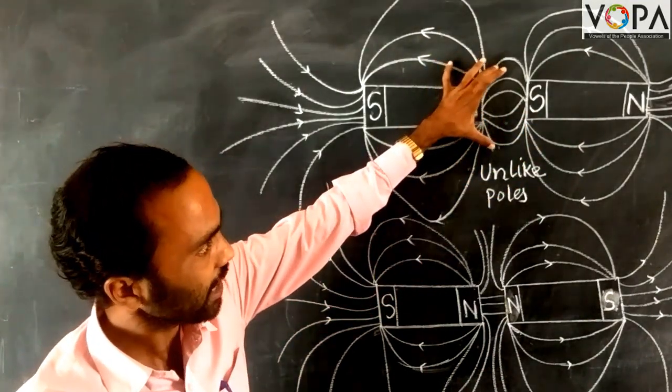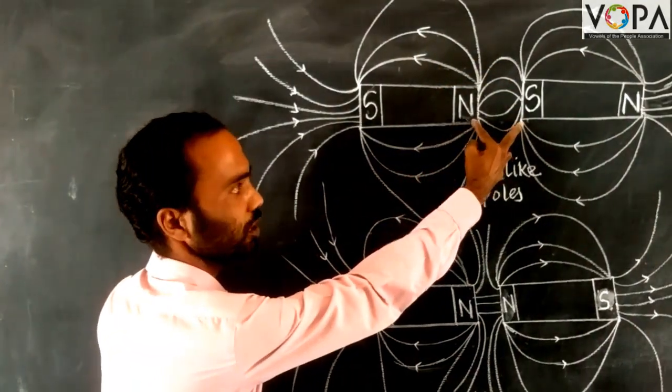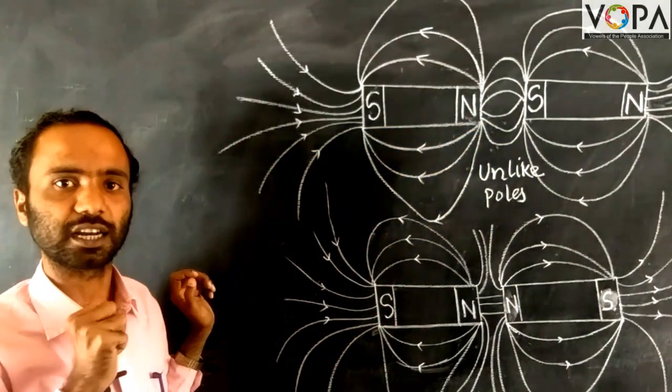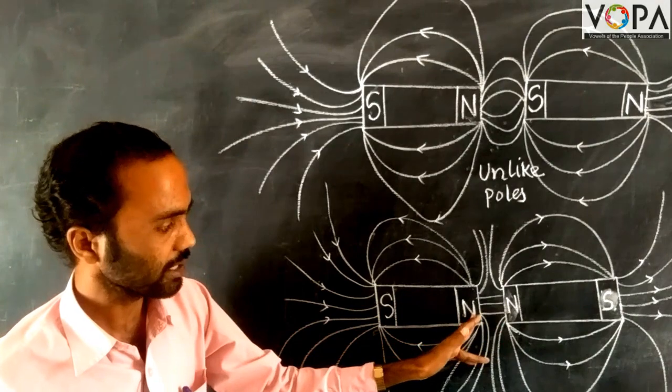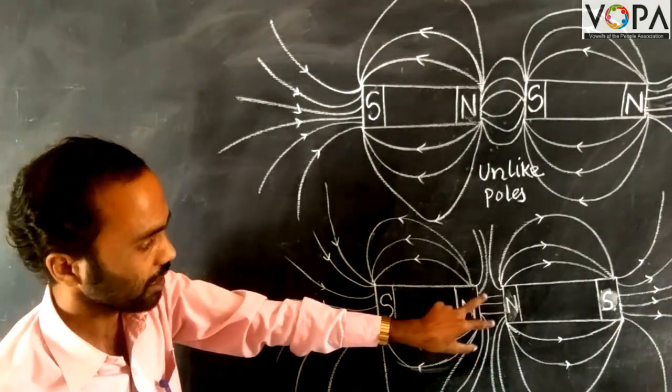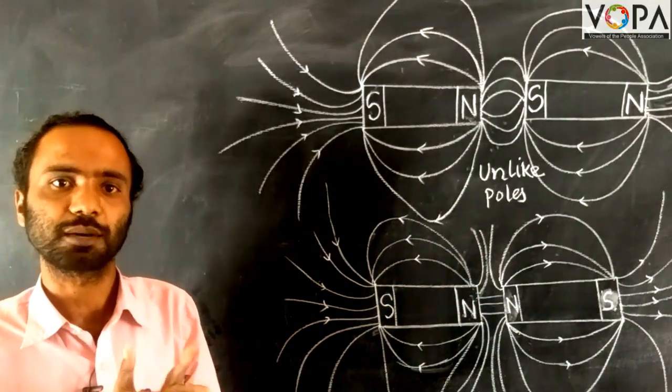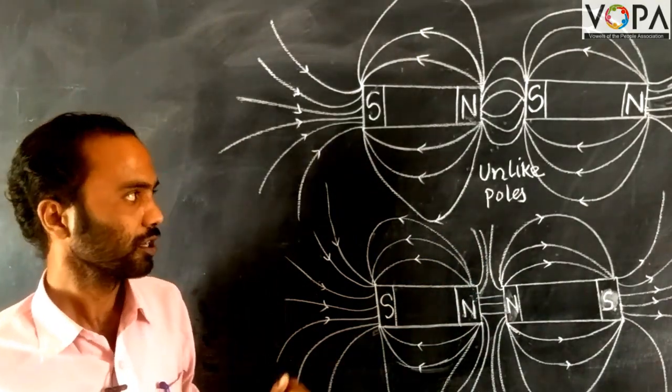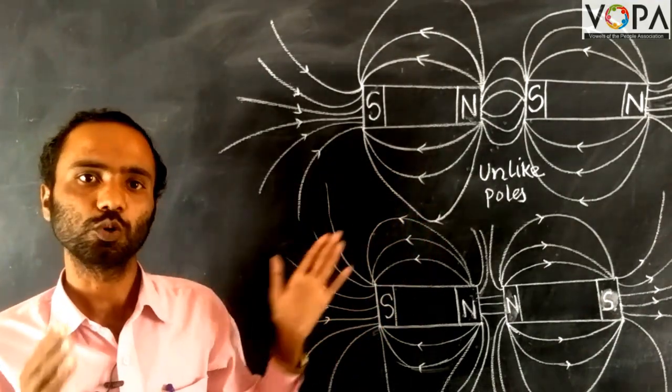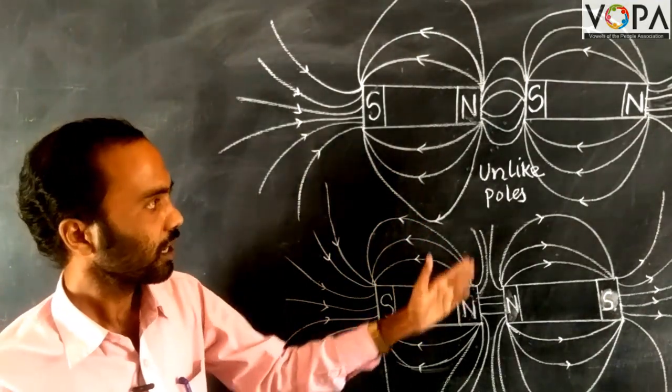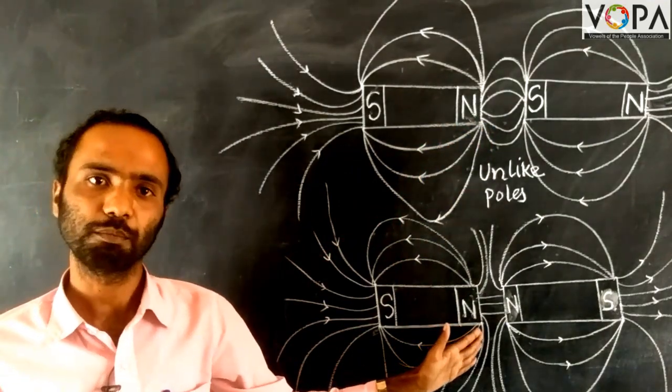The lines of force get attracted to each other between unlike poles. Between like poles, there is repulsion. So these lines of force help us to explain the attraction between magnets and the repulsion between magnets.